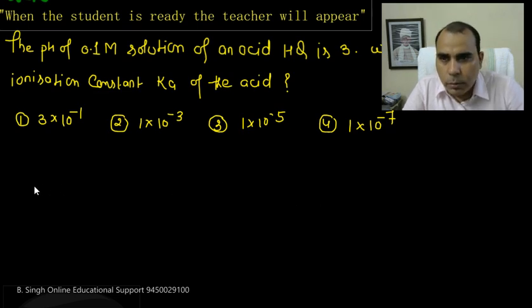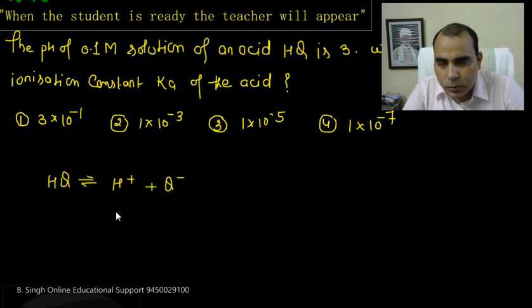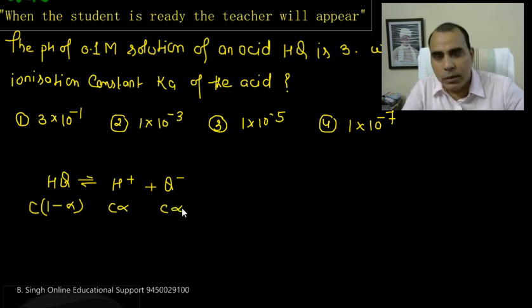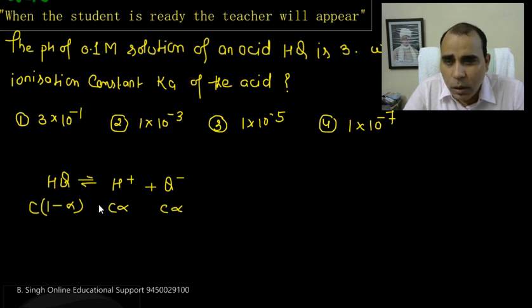To solve the question, we will see the equilibrium of the acid HQ remaining in equilibrium with H+ plus Q-. If we think that the degree of dissociation is alpha and the initial concentration is c, then at equilibrium we have c(1-alpha) for HQ, and c alpha for both H+ and Q-. You can see the details in the video lecture.